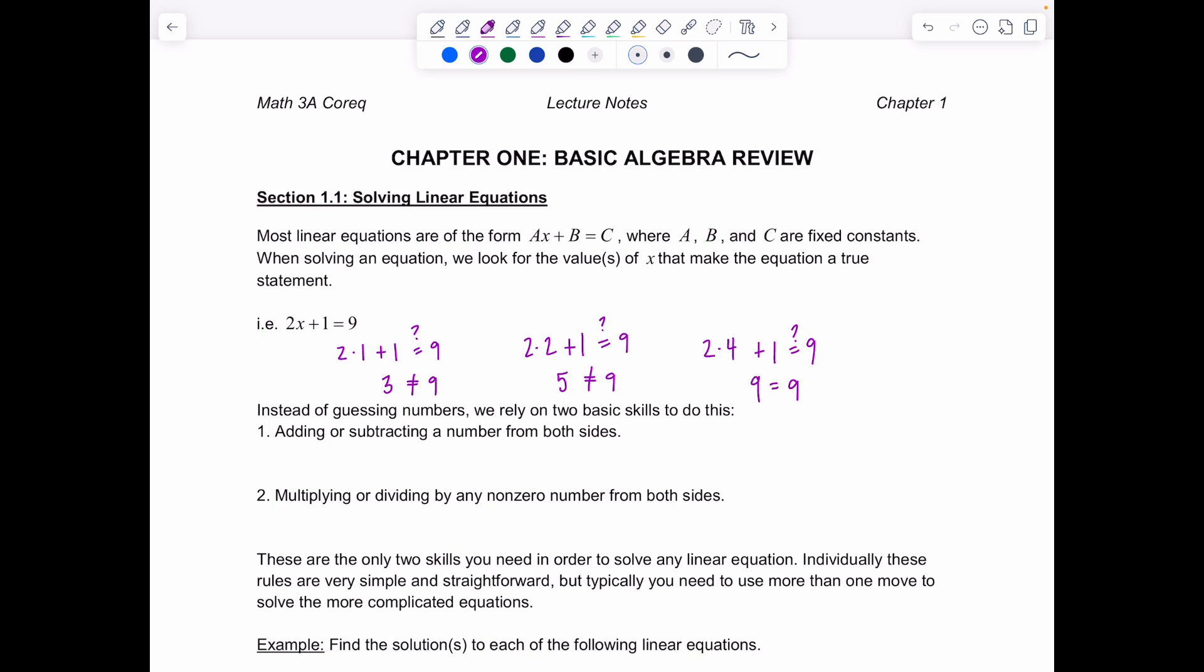But instead of guessing numbers right that's going to take forever. We want a more concrete approach and we rely on two basic skills or facts to be able to do this to solve equations efficiently not just dilly-dally guessing numbers all day. You are allowed to add or subtract the same number from both sides of an equation that preserves equality and you're allowed to multiply or divide by any non-zero number from both sides. And these are really the only two skills that you need to solve a linear equation. Individually the rules are very simple and straightforward but typically you're going to need to use more than one of these moves in order to solve more complicated equations.